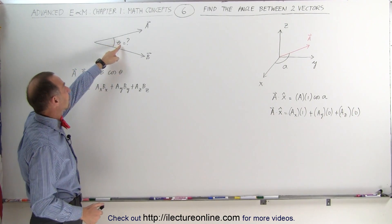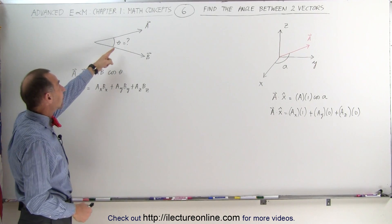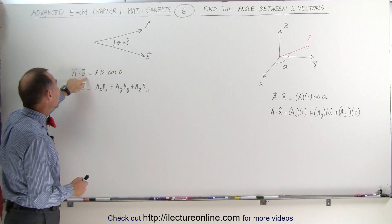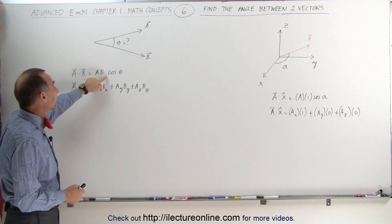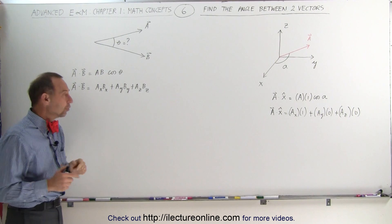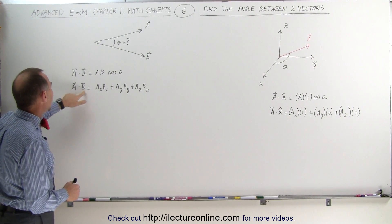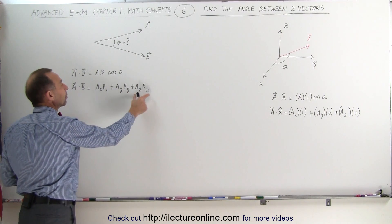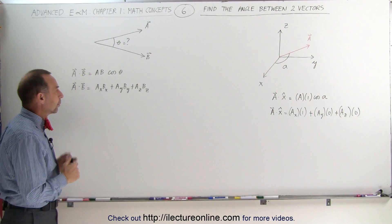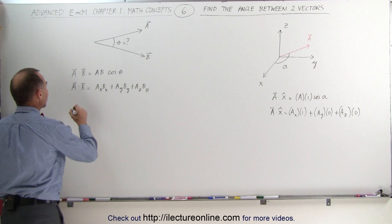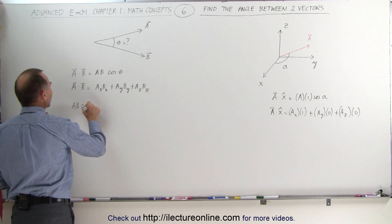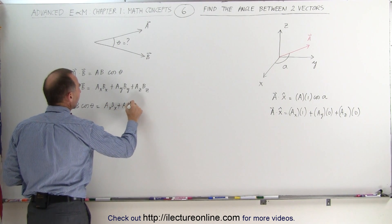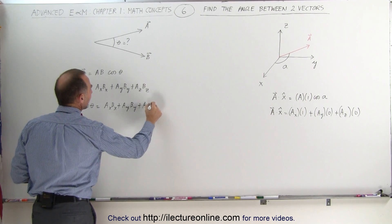Remember when we had two vectors and there was an angle between them? Let's say the angle is theta and we want to find the angle between them. The dot product or scalar product between the two vectors A and B can be defined as the magnitude of A times the magnitude of B times the cosine of the angle between them. Also, we can define the scalar product between A and B as the product between their x-components plus the product between their y-components plus the product between their z-components. So we can say that |A||B| cos(theta) equals A_x·B_x + A_y·B_y + A_z·B_z.